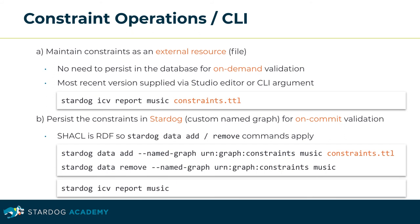You don't need to persist a shapes graph in the database for an on-demand validation. Just apply the most recent version via the Studio editor or CLI command argument. This allows for quick testing of changes during development, versioning of constraints within your source code management system, and applying the constraints to any — not only the containing — database. In order to leverage the guard mode and apply constraints automatically on commit, they must be persisted in the database. Since the shapes graph is RDF, use the 'stardoc data add' or 'stardoc data remove' commands to manage the constraints within a dedicated named graph of your choice.